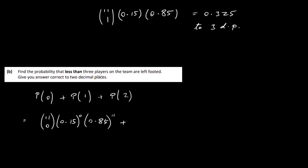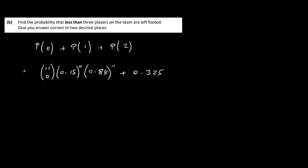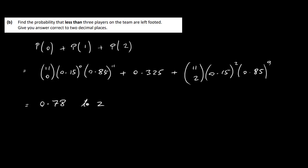So we calculate: P(0) is 11 choose 0, times 0.15 to the power of 0, times 0.85 to the power of 11. P(1) we've already worked out as 0.325. P(2) is 11 choose 2, times 0.15 to the power of 2, times 0.85 to the power of 9. Work them out individually on your calculator and add them up — your answer to two decimal places should be 0.78.